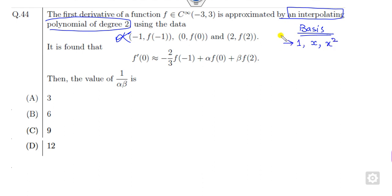First, consider f(x)=1. What is the derivative? It is 0. So this equation becomes 0 minus... what is f(-1)? It is 1. f(0) is again 1, f(2) is again 1. What is the meaning of that? This gives us alpha plus beta equals 2/3.